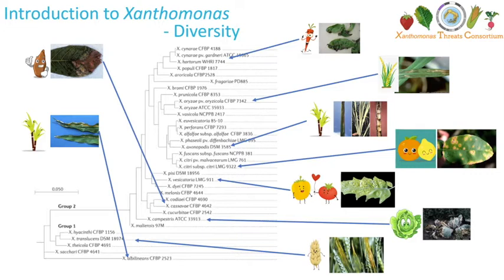You can see here the diversity of host plants for Xanthomonas, which can include carrots, rice, citrus fruits, tomatoes and peppers, brassicas — this is a recurring theme with the famous Xanthomonas campestris — and then barley. And this cheerful-looking fellow here is a cassava root. So there's a massive diversity of hosts for Xanthomonas.